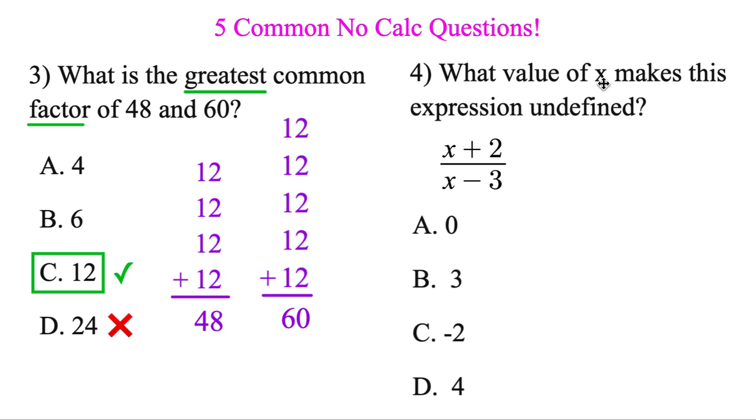Okay, the next one. What value of x makes this expression undefined? There's two times when something's undefined: when you divide by zero, or when you take the square root of a negative. When you do these with the calculator, it's going to give you an error. Now this one doesn't have a square root, so you can ignore that. But it could divide by zero if the bottom becomes zero.